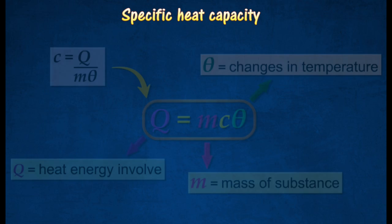The heat Q received or lost when a substance of mass M undergoes a temperature change of θ is given by Q = mcθ.